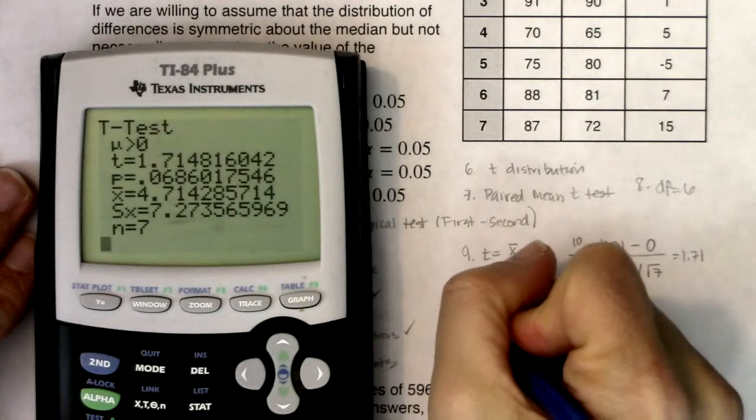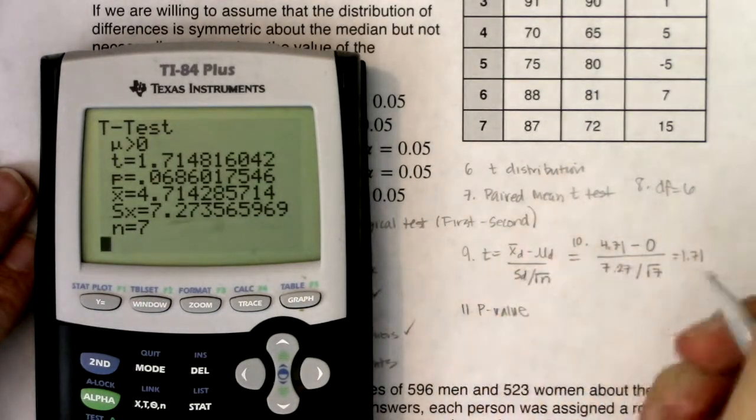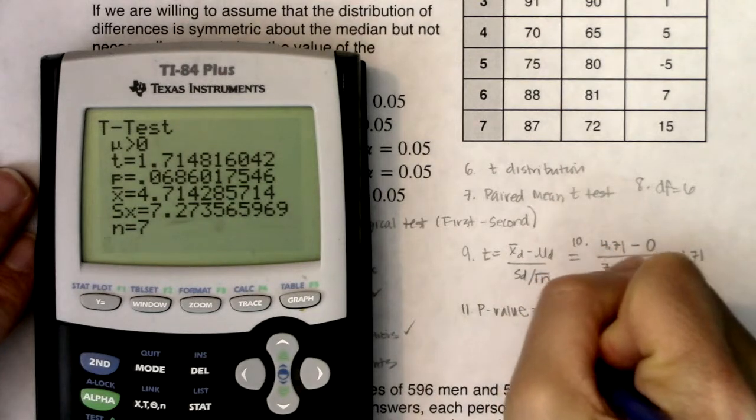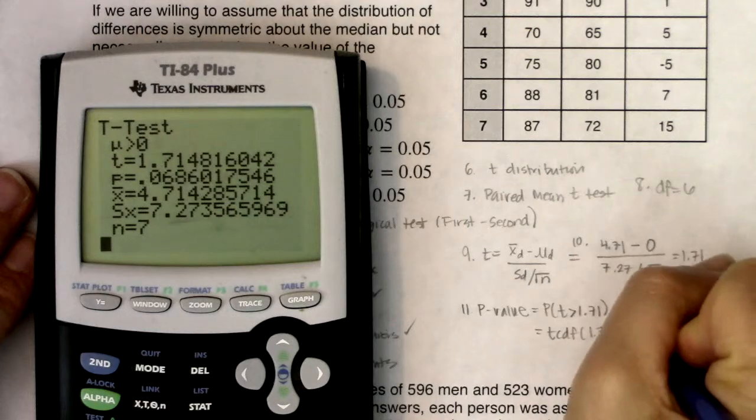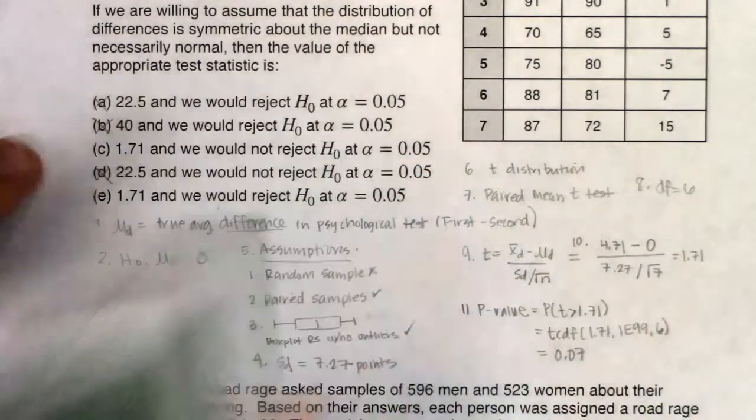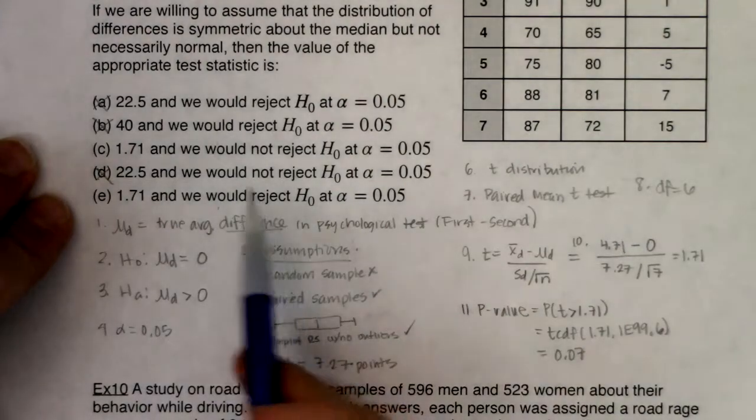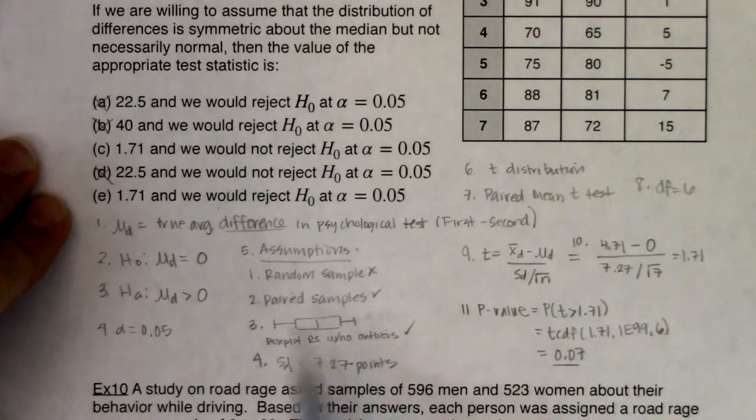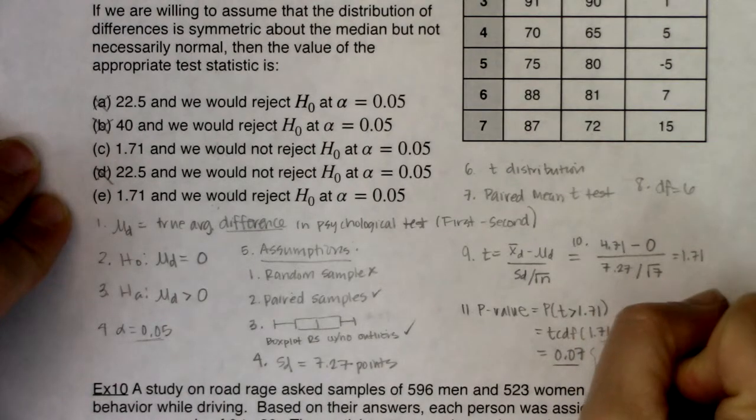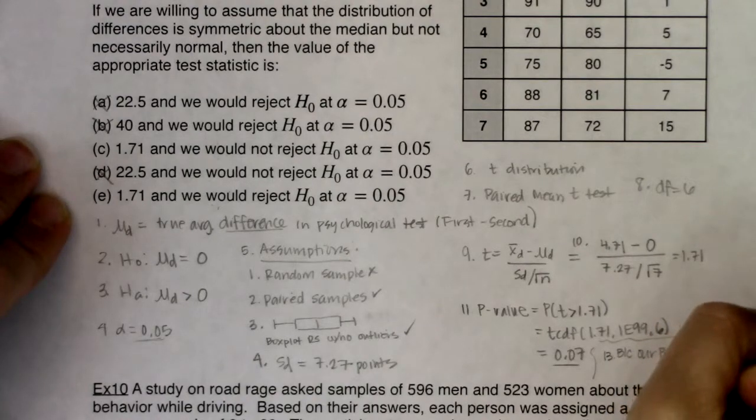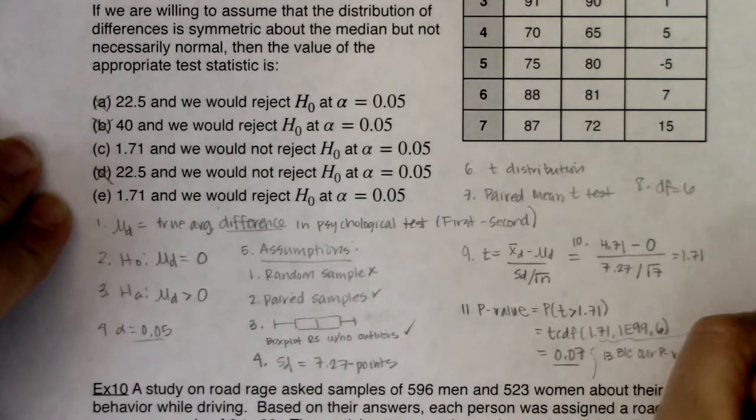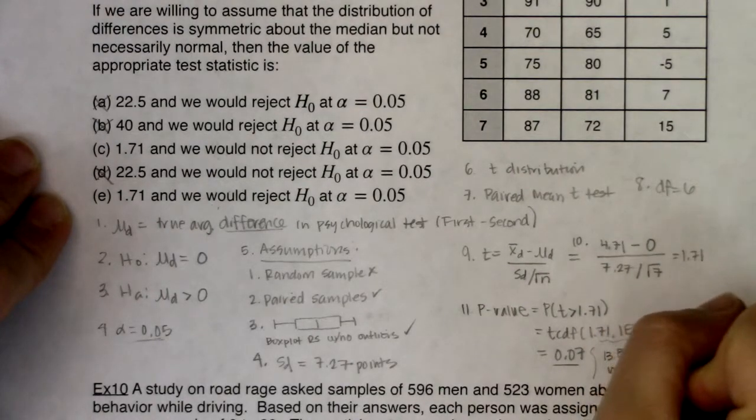If I wanted to get the P value, I could use TCDF. Just so we're clear, I could have gone T was greater than 1.71, and I could have said TCDF, low, high, degrees of freedom, and I would have ultimately gotten, what was our P value? It looks like it's about 0.07. But with all that being said, we ultimately have to decide, are we going to reject or fail to reject? So I have a P value of 0.07 and an α of 0.05. I ran out of room, but if I was going to do step 13 here, I would say because our P value is greater than α, we fail to reject H₀.